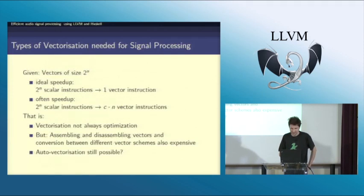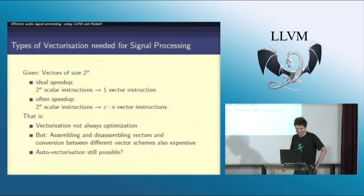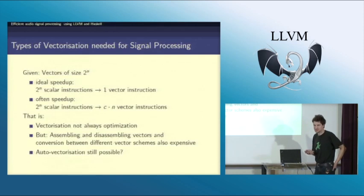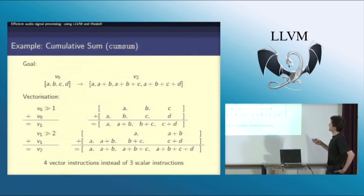Most things I have read about automatic vectorization seem not to handle this case — please correct me if I'm wrong. But I think those kinds of algorithms make auto-vectorization more complicated. To give you an idea: the cumulative sum — I have a vector of four numbers and I want to take the first number,